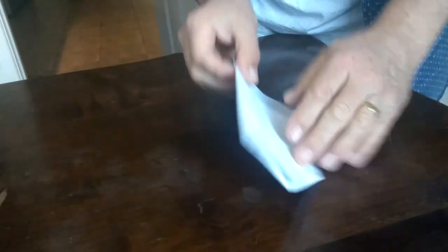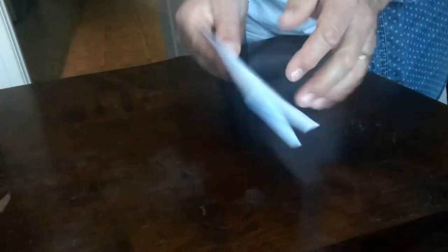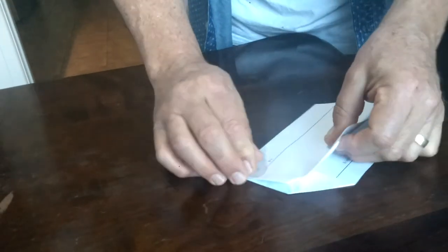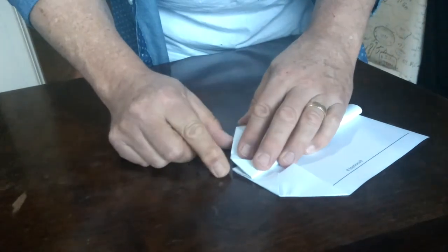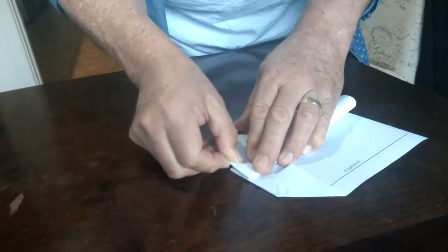Number seven appears on both sides. So we need to fold both the number seven over. And as you can see it's all right angles.